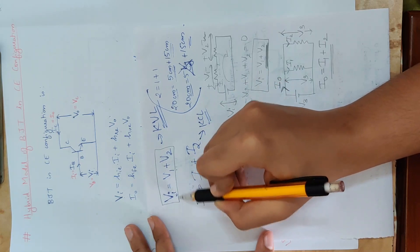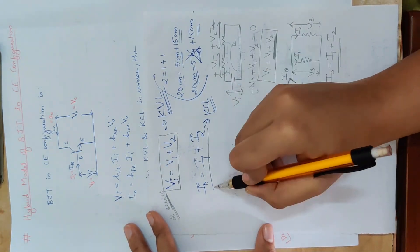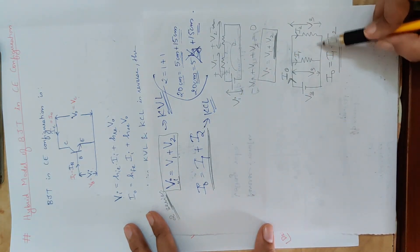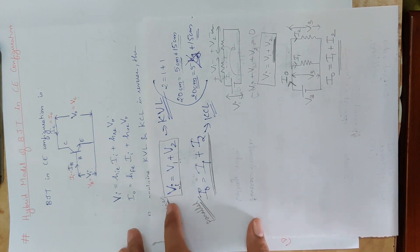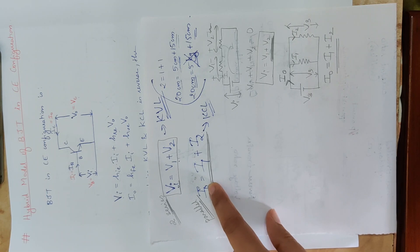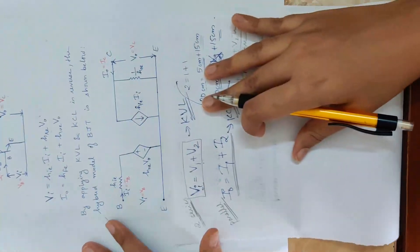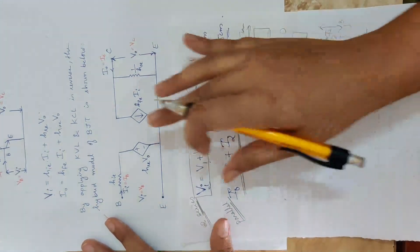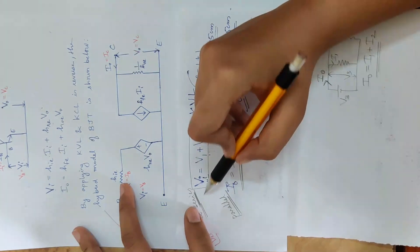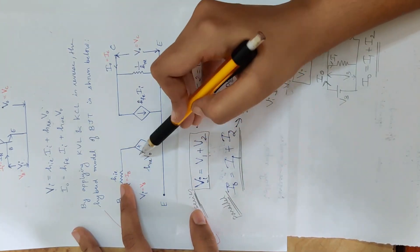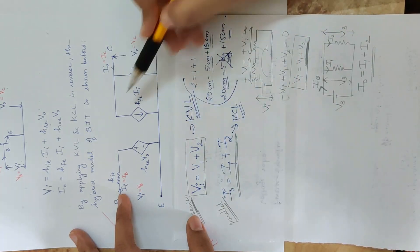Voltage sum is given by two series connections. Current sum is given by parallel connection. Input side is given series connection; output side is given parallel connection. Two elements are connected in series on the input; two elements are parallel on the output.